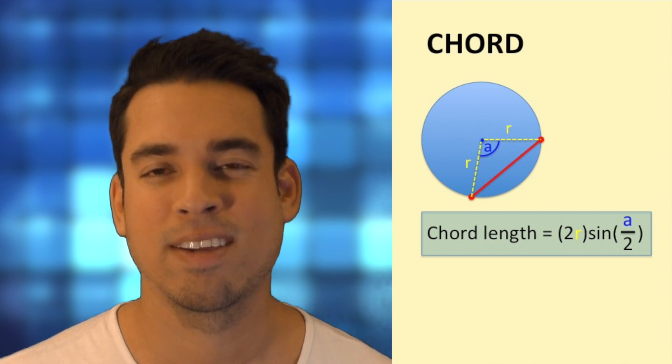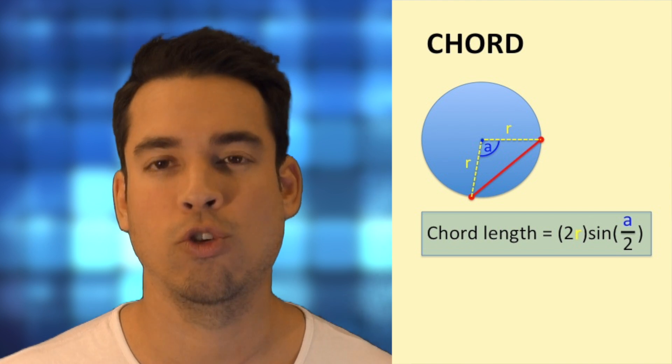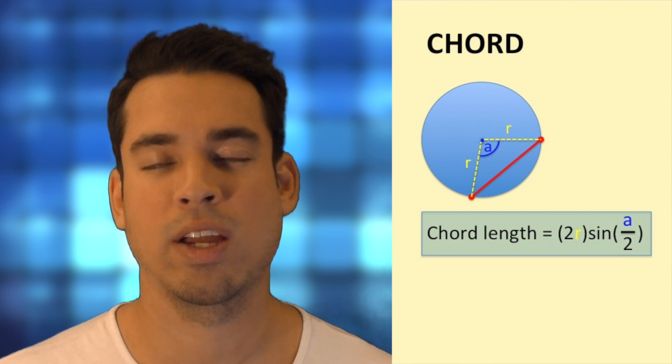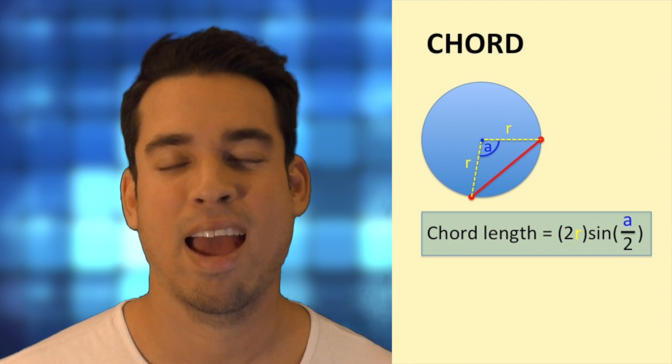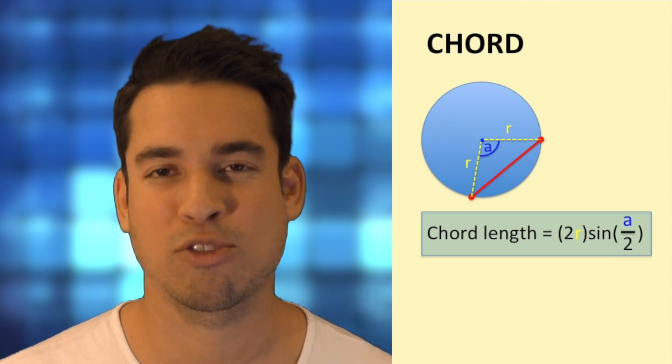So it's two times the radius times sine of half of this angle that is created.